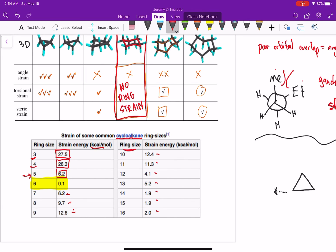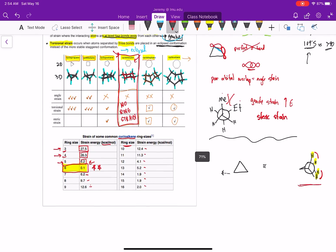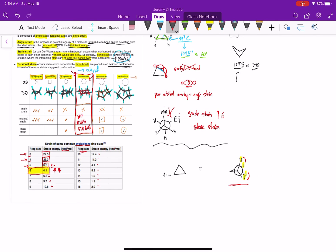So basically what we need to understand here is cyclopropane and cyclobutane have a lot of strain. Cyclopentane is pretty low, but cyclohexane is really, really special, because that has essentially no ring strain. And we're going to focus on cyclohexane in our next lesson.